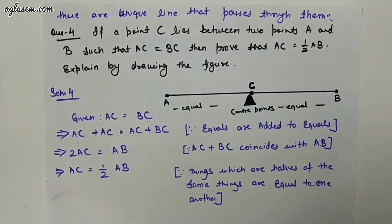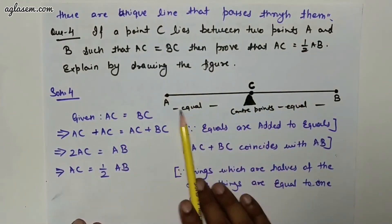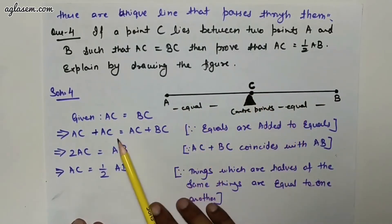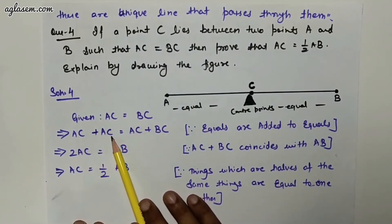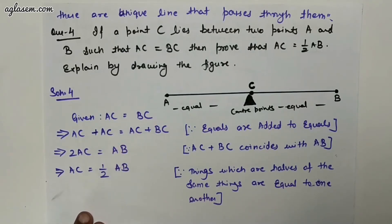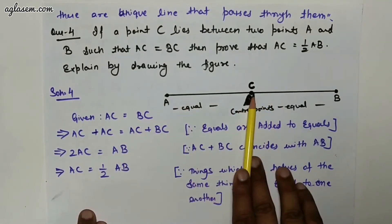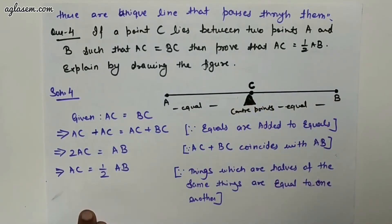Question number four: if a point C lies between two points A and B such that AC equals BC, then prove that AC equals one-half AB. Draw point A, B, and center point C. Given AC equals BC, so AC plus AC equals AC plus BC, therefore 2AC equals AB, and AC equals one-half AB.